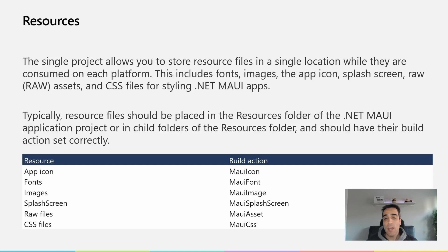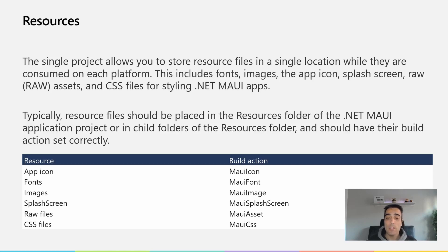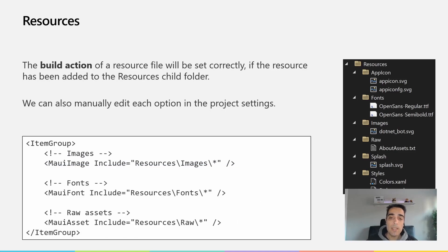For example, the application icon will use the MauiIcon build action, the font will use the MauiFont build action, images will use the MauiImage build action, the splash screen will use the MauiSplashScreen build action, raw files use MauiAsset, and a CSS file uses MauiCss. This will directly modify the content of your .csproj. We can also manually edit each option in the project settings and modify the .csproj manually, but if we put every resource in the correct folder, that will happen automatically.